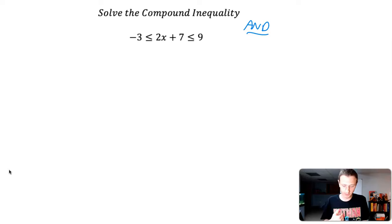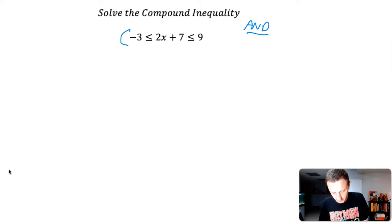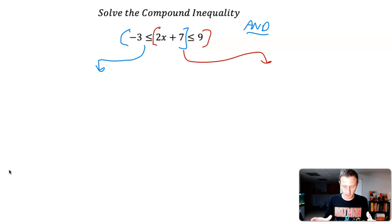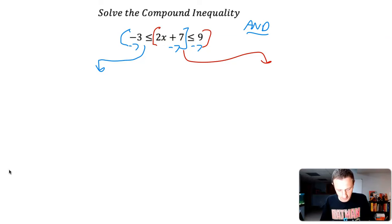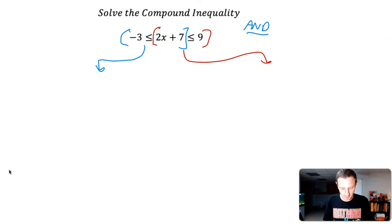Here's how I like to go about doing this. I've seen a lot of different strategies, but I like to take this and set up one inequality, and then take the other part and set up another inequality. I have seen people solve both at the same time — for example, subtracting seven from both sides simultaneously — and that's fine, but I think it gets a little bit messy. I'd rather just set them up separately and go from there.